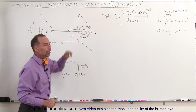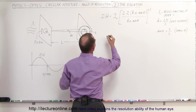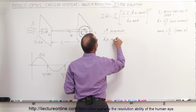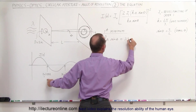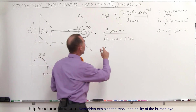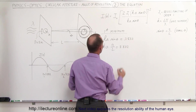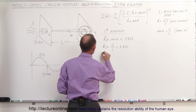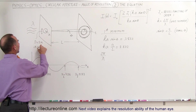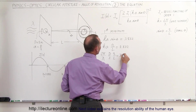To find the angle to the first minimum, we set the contents of the Bessel function equal to 3.832: Ka·sinθ = 3.832. Writing sinθ as R/L gives K·A·R/L = 3.832. Replacing K with 2π/λ and A with D/2 (the diameter of the aperture), we get (2π/λ)·(D/2)·(R/L) = 3.832. The factor of 2 cancels out.